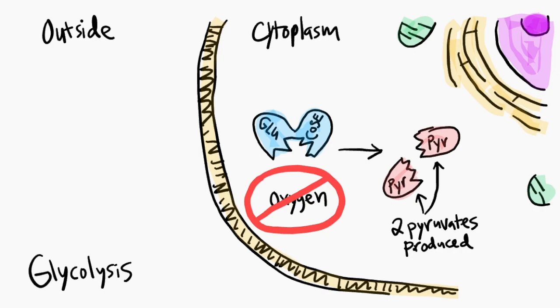During glycolysis, hydrogen and electrons are taken away from the glucose. The result is a molecule called NADH and enough energy to create two ATP molecules.